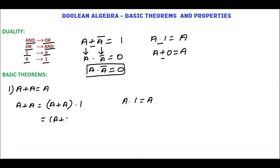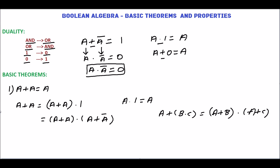Now a + a · 1 can be written as a + a · (a + ā), since 1 = a + ā. From the distributive law, a + b · c = (a + b) · (a + c), so we get (a + a) · (a + ā). Then (a + a) · (a + ā) = (a + a) · 1 = a + a · ā = a + 0 = a. Hence we have proved a + a = a.